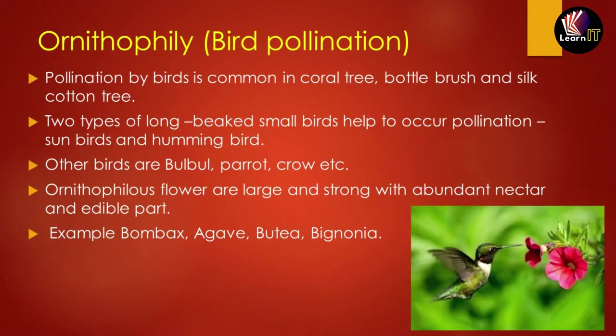The next kind of pollination is ornithophily, which is bird pollination. It is most common in coral trees, bottle brush, and silk cotton trees. Birds with long beaks help in this kind of pollination — for example, sunbirds and hummingbirds. Other birds that help include bulbul, parrot, and crow.